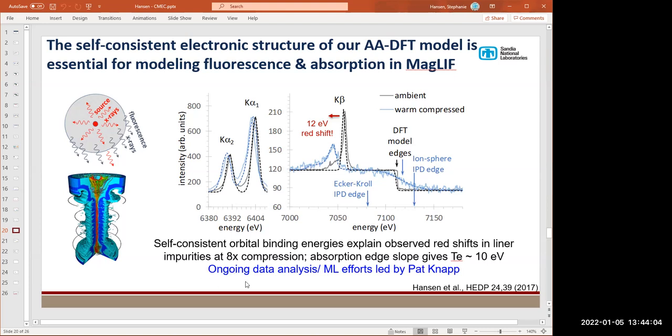I'll just give a plug to my colleague Pat Knapp who has a group of his own where they're working on machine learning efforts for analysis to bring in all of the sources of data, the spectra, the neutron yields that we collect from each experiment, and do rigorous and robust data analysis.